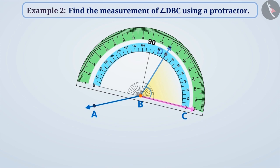We have to choose the scale on which the inscribed 0 degrees is close to the second point C. Since the inner scale is close to 0 degrees, we will choose the inner scale.